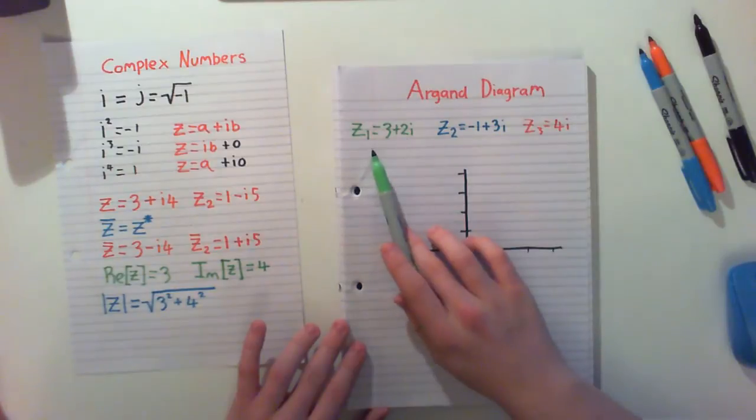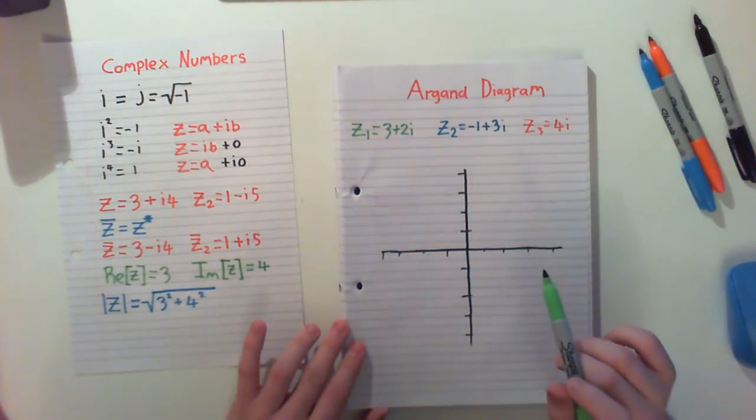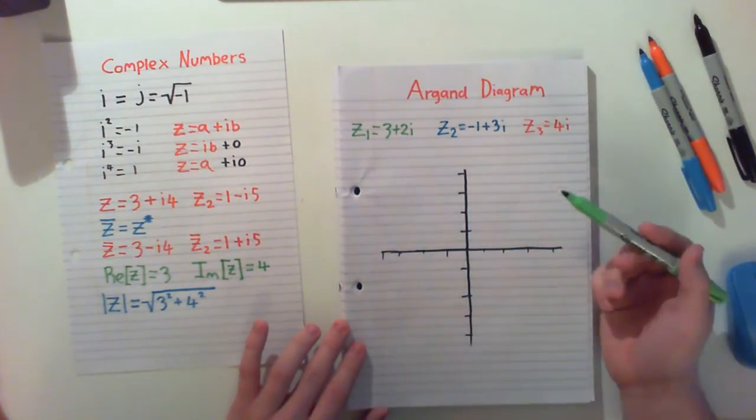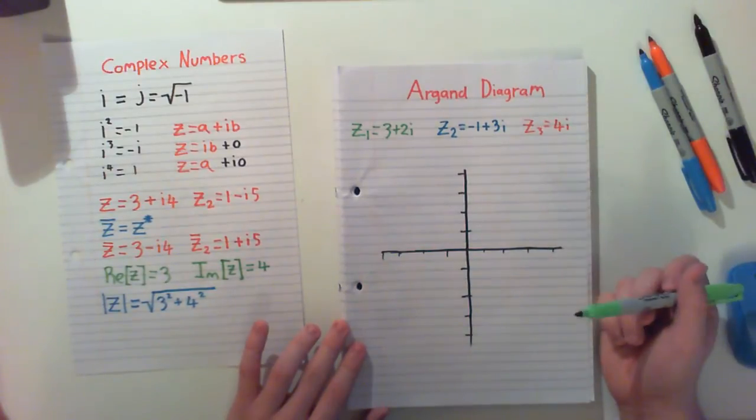I've given ourselves a few different complex numbers here, written in different ways. We're going to first start by plotting these on an Argand diagram and I'll be showing you how to do that.